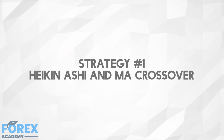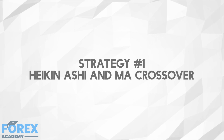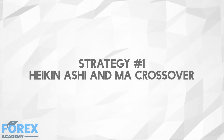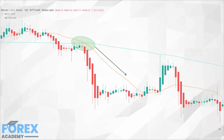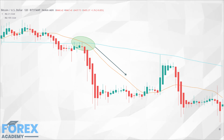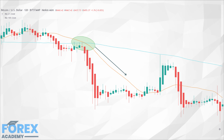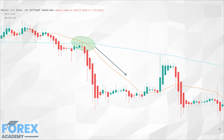Strategy 1: Heiken Ashi and Moving Average Crossover. With the cryptocurrency market mostly being in a downtrend since 2017, we have to look at some good strategies for trending markets, whichever way they go. This strategy includes Heiken Ashi as well as slow and fast moving average crossovers to create an entry point, a profit target, and a stop loss. It is suitable for automation as well as beginner traders as it is quite easy to pick up.